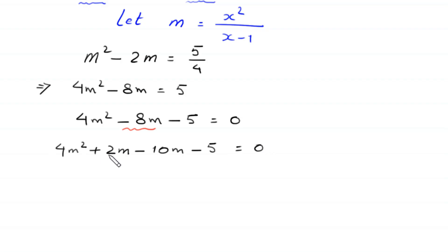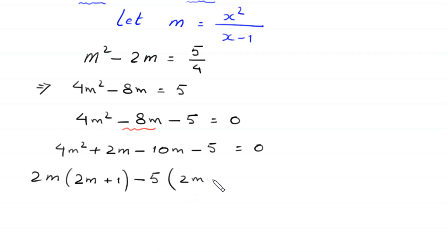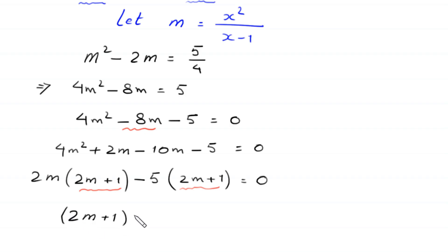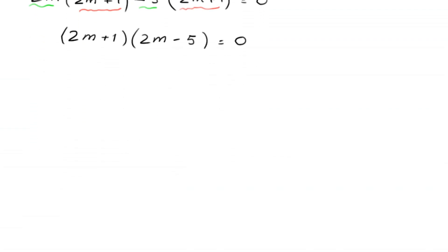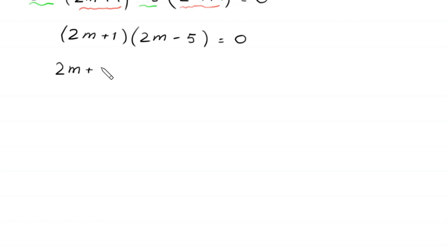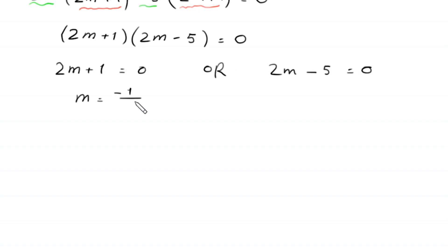From the first two terms we factor out 2m, giving 2m(2m plus 1), and from the last two terms we factor out negative 5, giving negative 5(2m plus 1) equals 0. Since (2m plus 1) is a common factor, we get (2m plus 1)(2m minus 5) equals 0. So either m equals negative 1 over 2 or m equals 5 over 2.